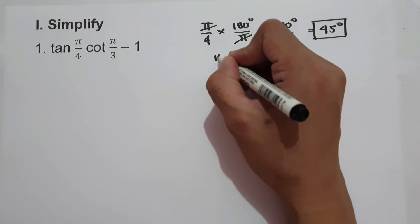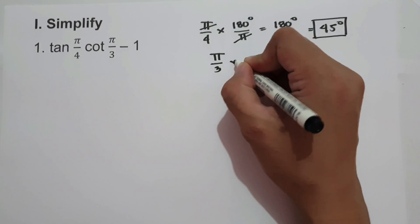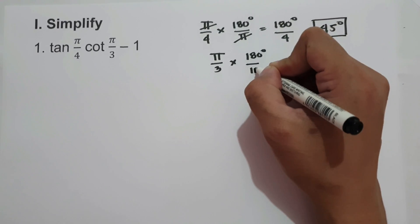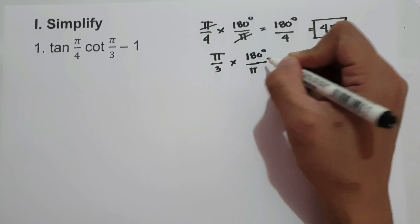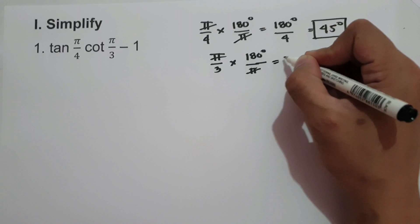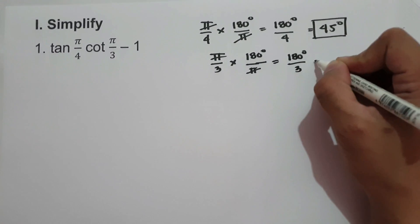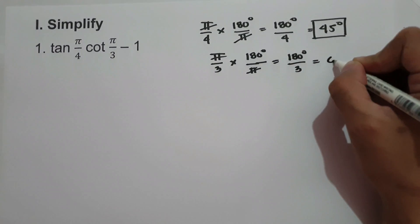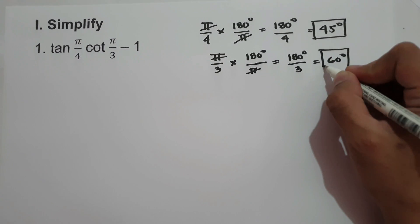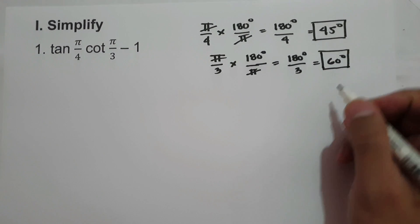And we have pi over 3. Let us multiply by 180 degrees over pi. Let us cancel pi, and we have 180 degrees over 3, that is 60 degrees. And this will be the value of pi over 3 in degrees.